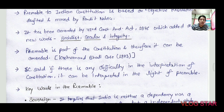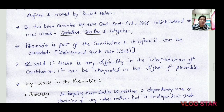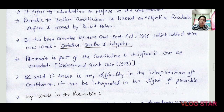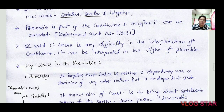The Preamble of the Indian Constitution has been amended once, in 1976, by the 42nd Constitutional Amendment Act. By that amendment, three words — socialist, secular, and integrity — were added to the Preamble. The Preamble is a part of the Constitution, which was declared in the Kesavananda Bharati case 1973. Earlier, in the Berubari case, it was held that the Preamble is not a part of the Constitution and cannot be amended, but the Kesavananda Bharati case held that the Preamble is a part of the Constitution and can thus be amended.